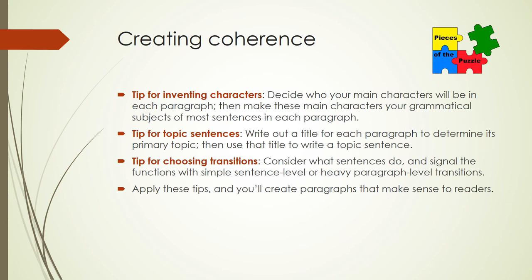How do writers create coherence? From my experience as a writer, I recommend three practical tips for creating coherent paragraphs. First, the tip for inventing characters: decide who your main characters will be in each paragraph, then make these main characters your grammatical subjects of most sentences. Consistent characters help make paragraphs cohesive and coherent in four ways: they create consistent subject-topic strings, they link ideas clearly, they repeat key words, and they create a consistent point of view throughout a passage.